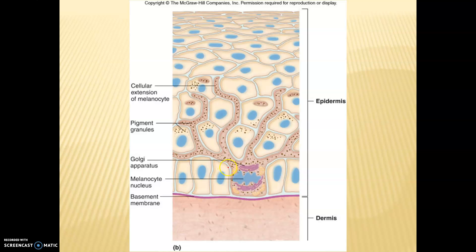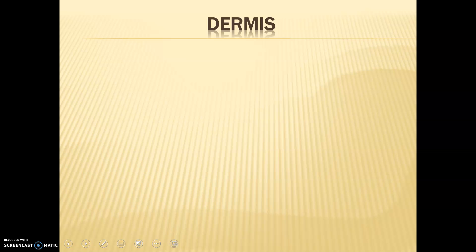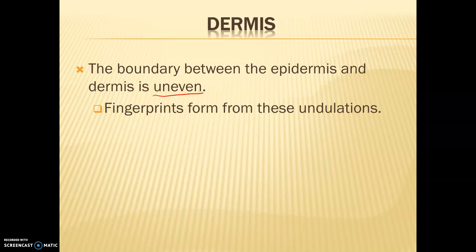As you can see in the image, our melanocyte branches upward, and those little brown dots are the melanin that produces protection from UV radiation. If you look at this image, these dark brown cells are our melanocytes right in the bottom stratum basale layer of our skin. Moving on to the dermis — our top part is the epidermis, the next layer is our dermis, which is our middle layer, and it's going to be mostly composed of connective tissues. The boundary between the epidermis and dermis is uneven, and this causes our fingerprints to form.